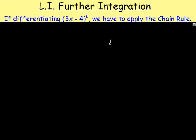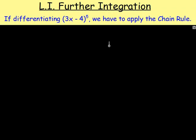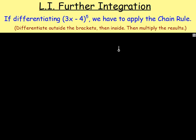Now if you remember back when we were looking at differentiating something like (3x − 4)^5, we had to apply the chain rule. The chain rule is when you differentiate outside the brackets, then you differentiate inside the brackets, and you multiply both answers together.